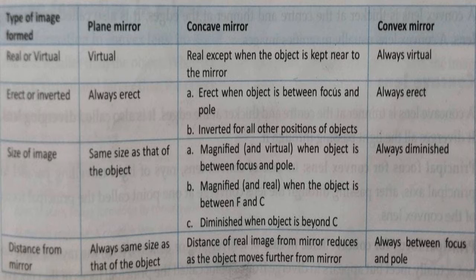Next, size of the image. In a plane mirror, the image formed is of the same size as that of the object. In a concave mirror, it is magnified when the object is between focus and pole. It is magnified and real when the object is between focus and center of curvature, and it is diminished when the object is beyond C. In a convex mirror, it is always diminished.